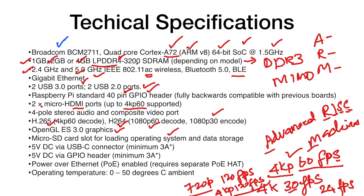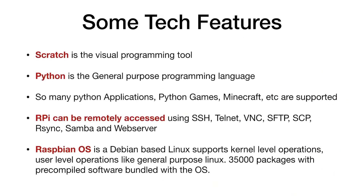You can use a micro SD card as your storage, download an operating system, flash it to the SD card, and it works. It has a minimum 3-ampere USB-C connector and supports Power over Ethernet, so if there is a power outage and no UPS, you can get power directly via the Ethernet cable. Operating temperature is 0 to 50 degrees Celsius.